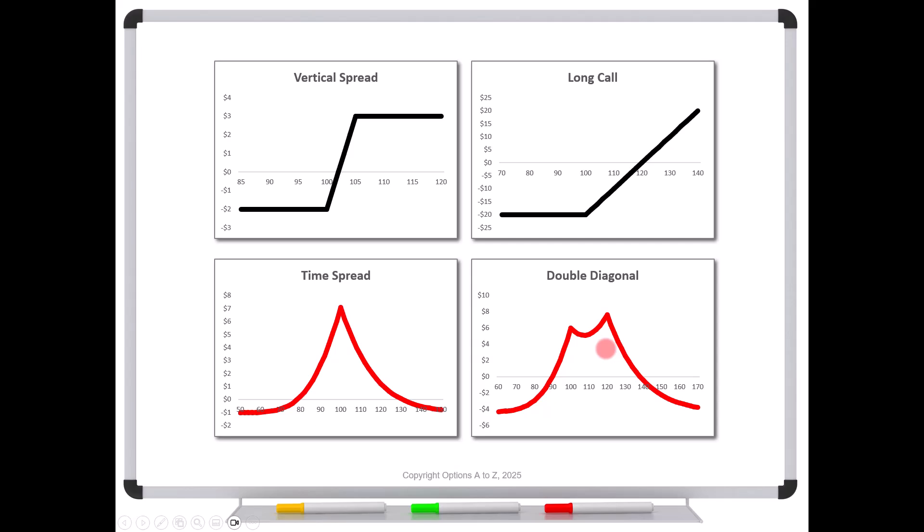So one of the questions that this trader was asking is he sent a screenshot saying for a double diagonal, normally it has kind of these two little peaks here. We have two different strikes. And he said, but when I put it in my platform, it doesn't look anything like this. Am I doing something wrong? Well, it's just not understanding the risk graphs. So let's go over to an Excel spreadsheet and take a look at why he was seeing a different picture from this.